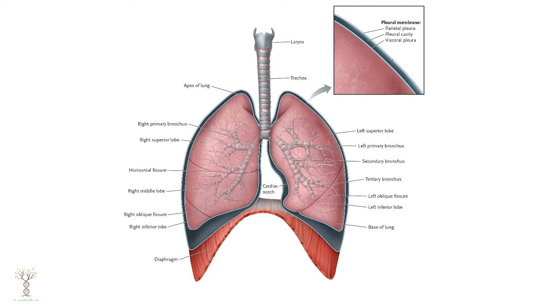The pleura are the membranes that cover the lungs. The visceral pleura covers the lungs, and the parietal pleura covers the inside of the thoracic cavity. In between there is a small pleural space that must always contain a little fluid to reduce friction. The pressure in this pleural space must always be lower than both the alveolar pressure and atmospheric pressure — it must be negative so that the lungs stay open. Without that negative pressure, the lungs could collapse.